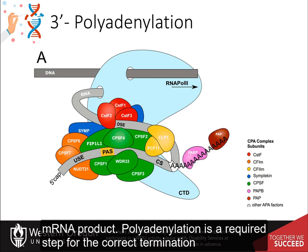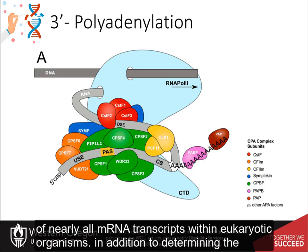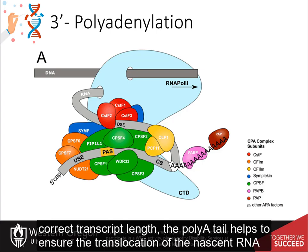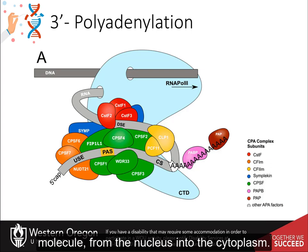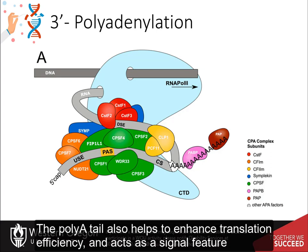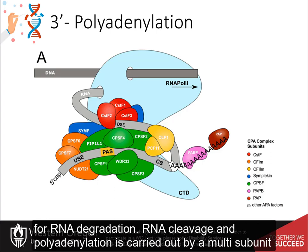Polyadenylation is a required step for the correct termination of nearly all messenger RNA transcripts within eukaryotic organisms. In addition to determining the correct transcript length, the poly-A tail helps to ensure the translocation of the nascent RNA molecule from the nucleus into the cytoplasm. The poly-A tail also helps to enhance translation efficiency and acts as a signal feature for RNA degradation.